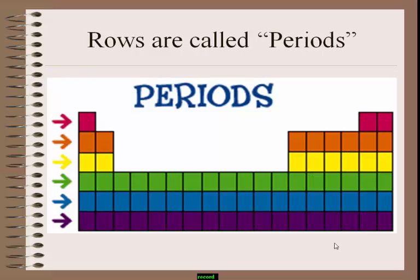As you already know, the rows which are present in the periodic table are called periods. See this diagram — it shows the number of rows present in the periodic table. These rows are called periods.